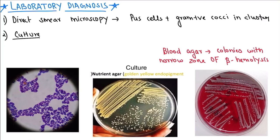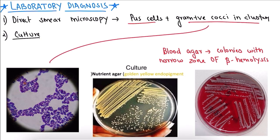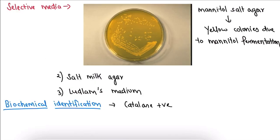Moving to laboratory diagnosis of Staph. aureus: on direct smear microscopy we see pus cells and Gram-positive cocci in clusters resembling grapes. On nutrient agar, golden yellow colonies are seen due to beta-carotene. On blood agar, colonies show a narrow zone of beta hemolysis.